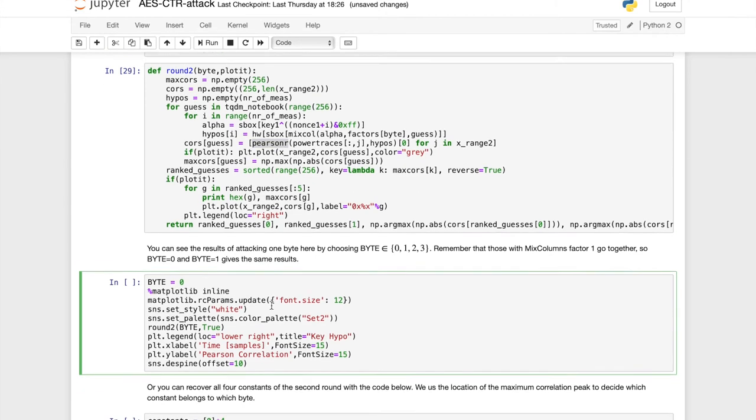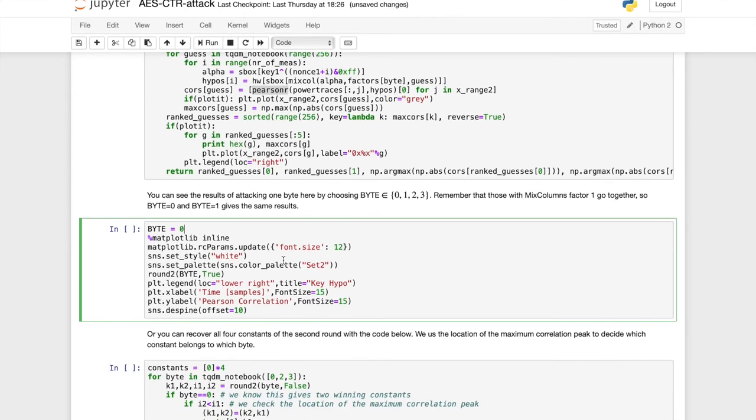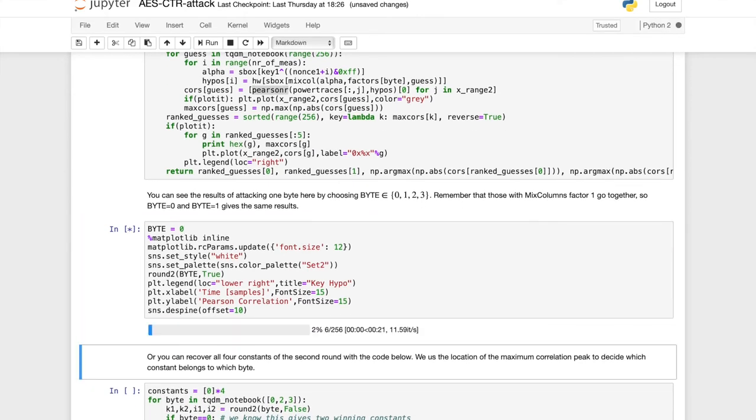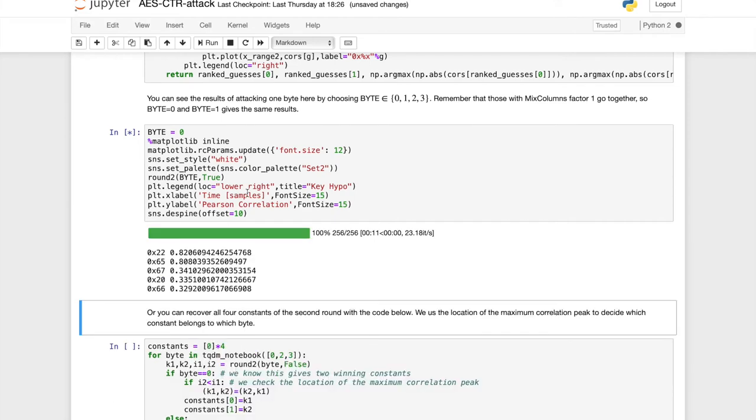We need to do this code for each byte of the column. And so I'll show it here for the first byte, but like I said, the first and the second byte have the same mixed columns factor. So that also means they have the same hypothesis and we'll actually be doing both of them at the same time. So this goes a lot faster than the first step, right? Because we have a lot less guesses to make.